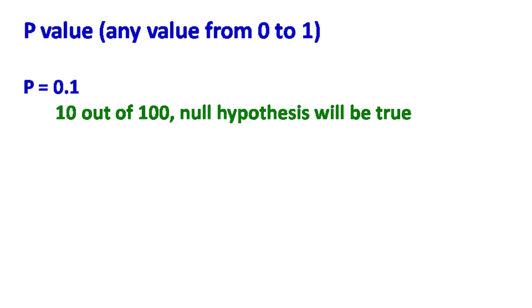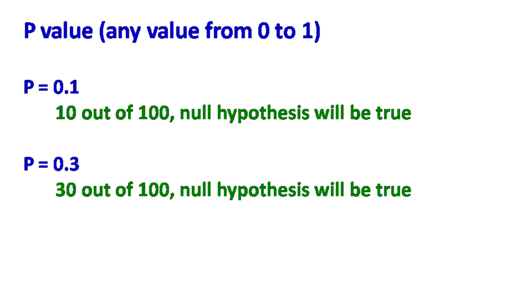The p-value can take any value from 0 to 1. Let's say the p-value is 0.1 — this means if I repeat an experiment 100 times, 10 out of 100 times the null hypothesis will be true. Let's say the p-value is 0.3 — this means if I repeat the experiment 100 times, 30 out of 100 times the null hypothesis is going to be true.